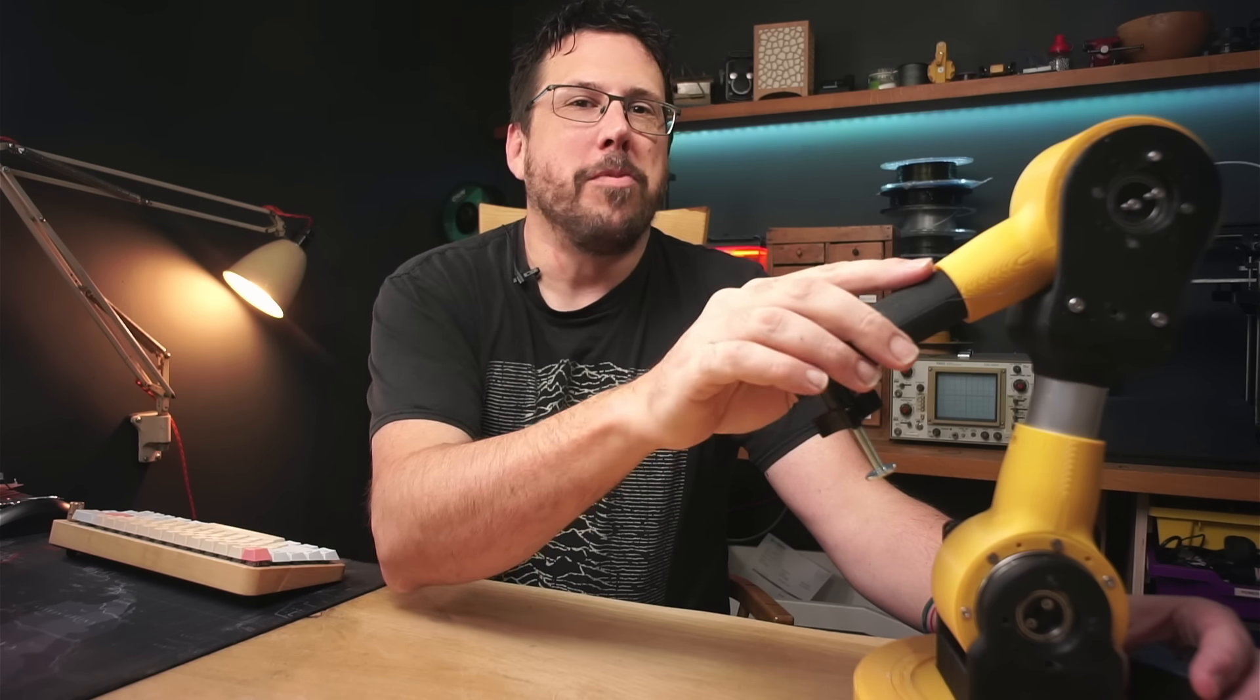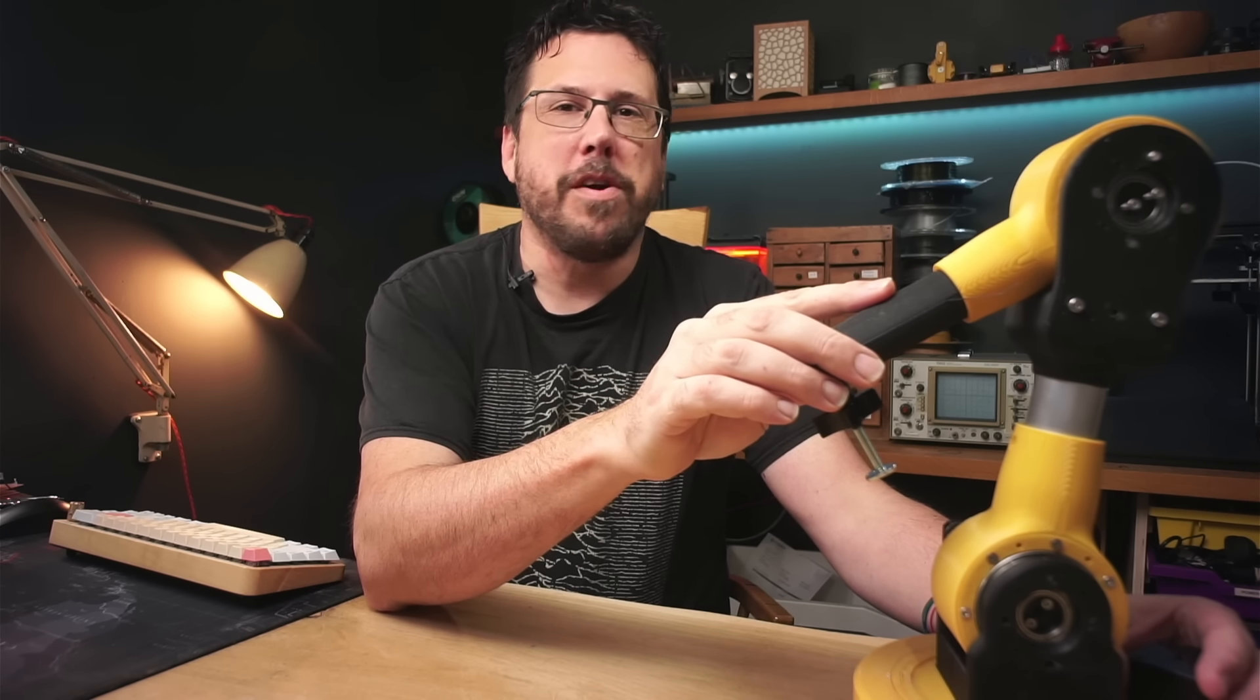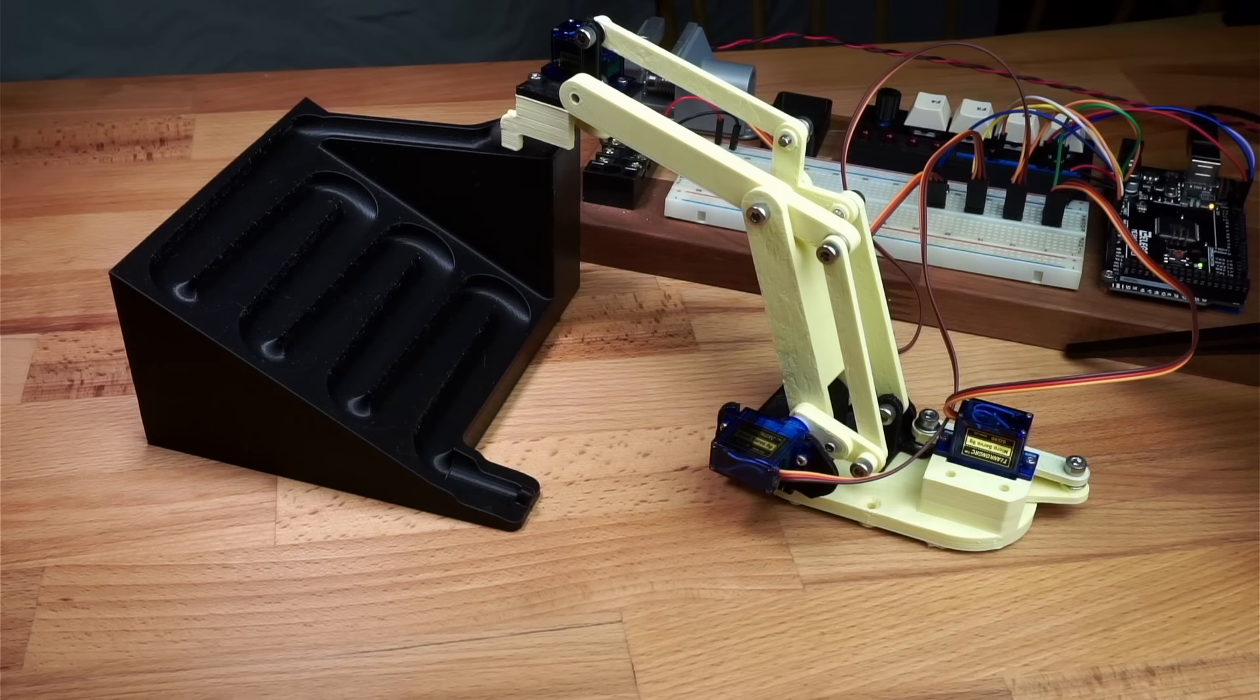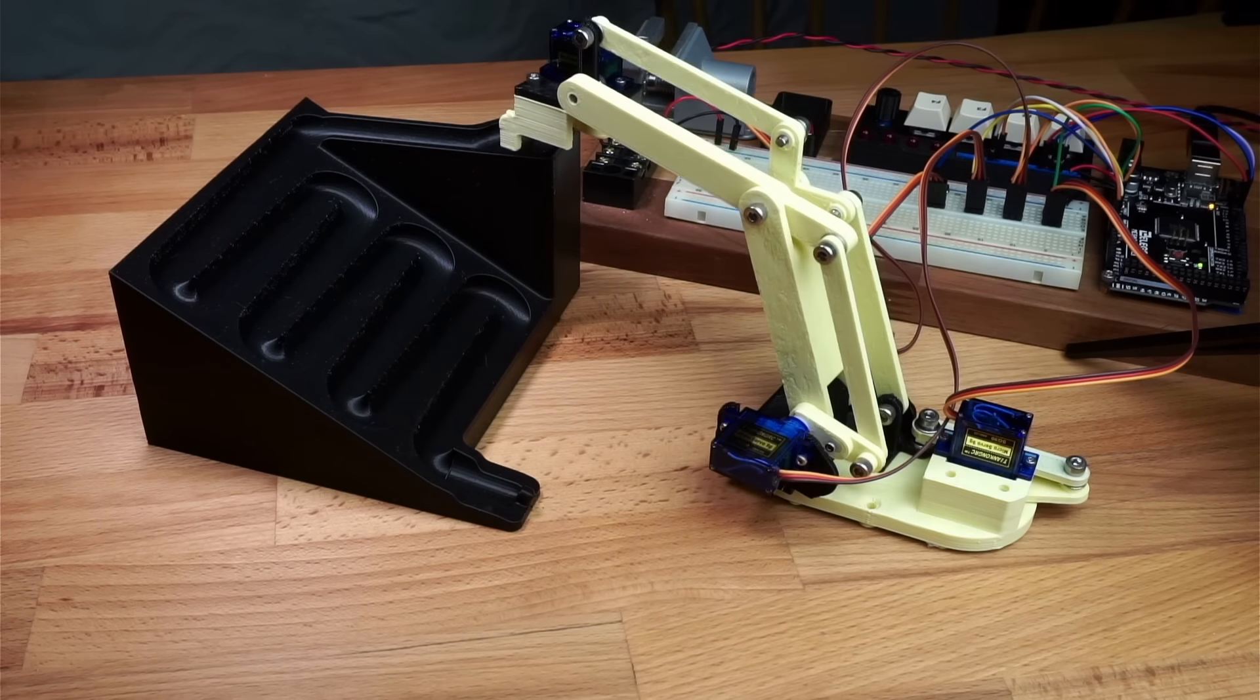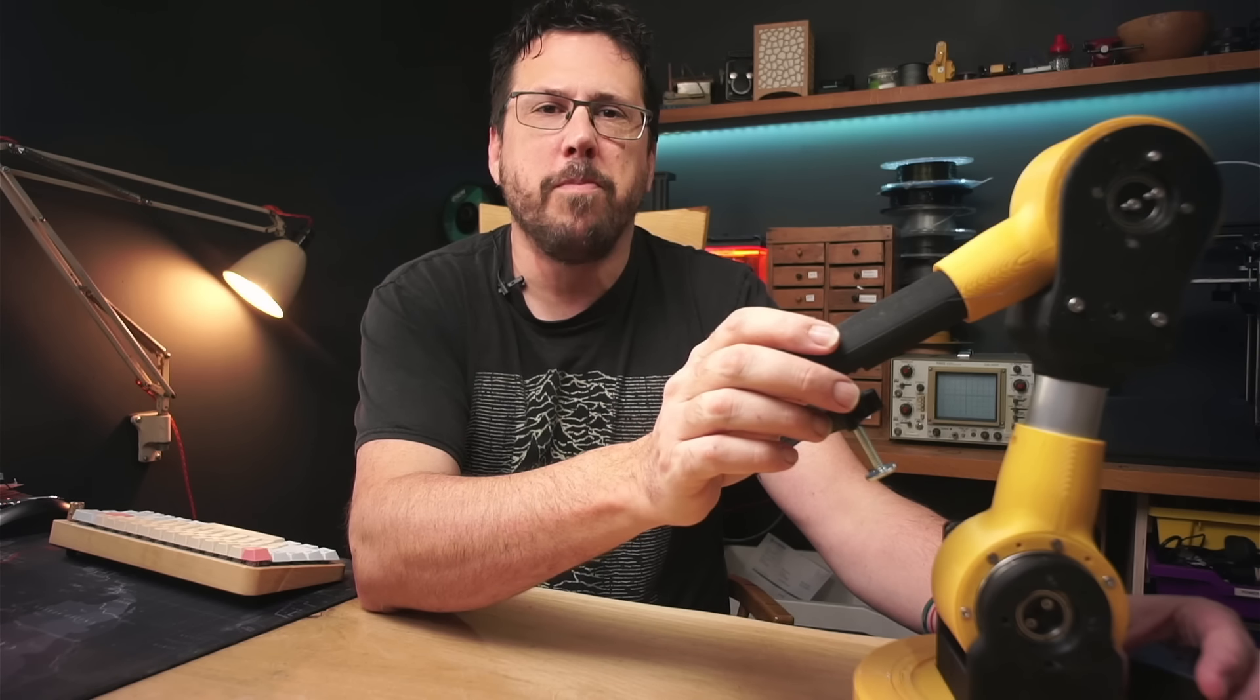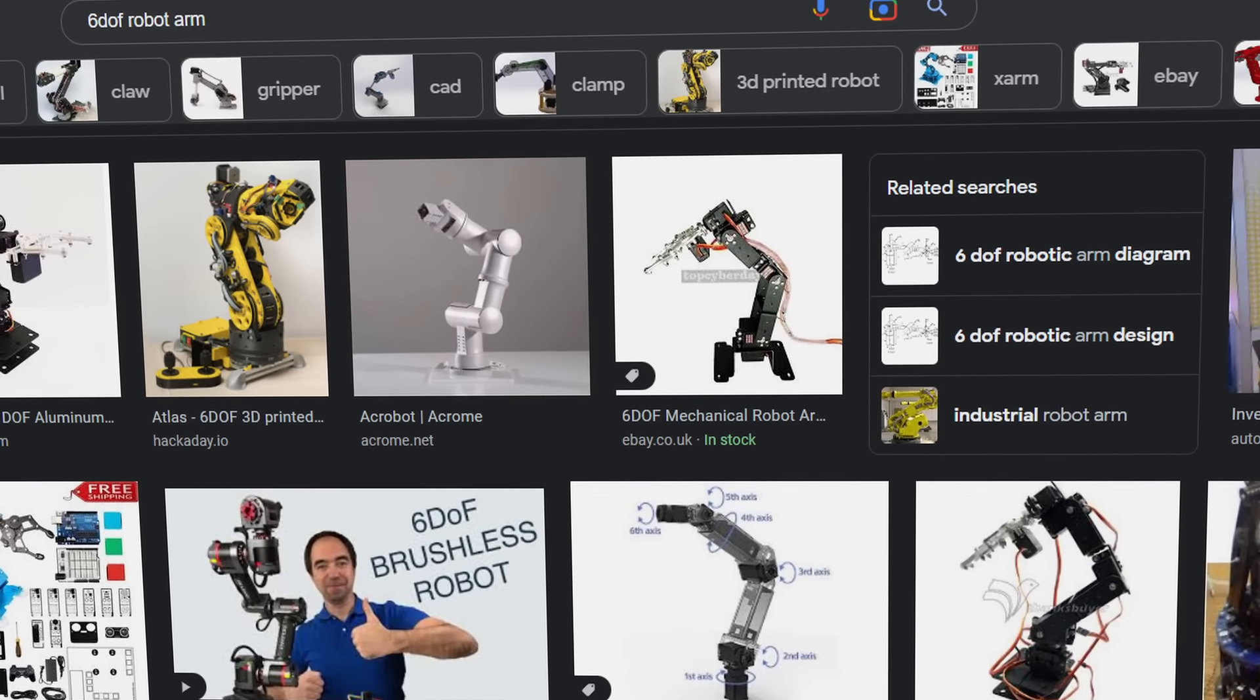It's fairly easy to build a robot arm such as this that has three degrees of freedom and I've shown it quite a bit in previous videos, but the problem really starts when you want to turn that simple arm into something useful - say an arm with six degrees of freedom.